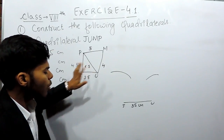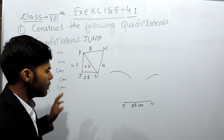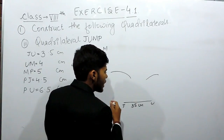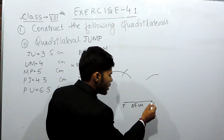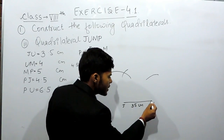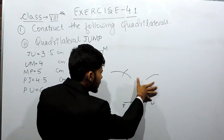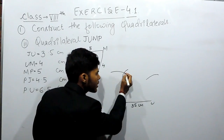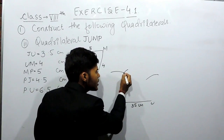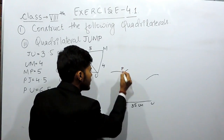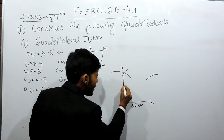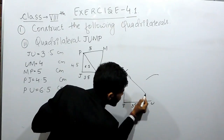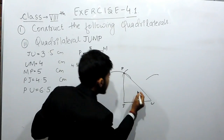Now open the compass to 6.5 centimeters, keep the sharp point at U, and cut an arc. This arc is 6.5 centimeters and represents the diagonal PU. This intersection point is point P — if you join it to J, that will be 4.5 centimeters, and PU will be 6.5 centimeters.